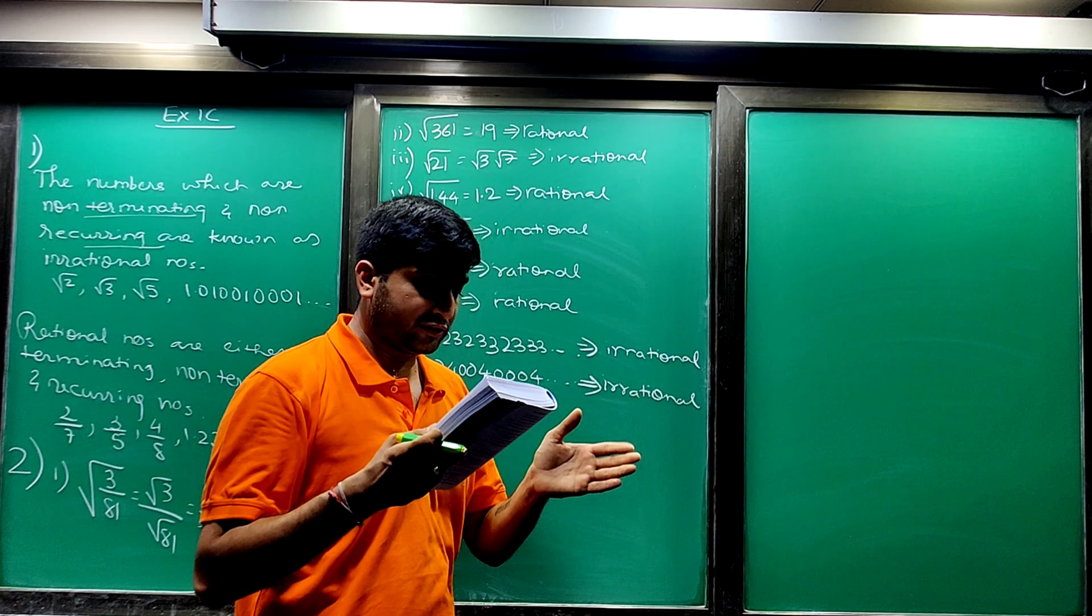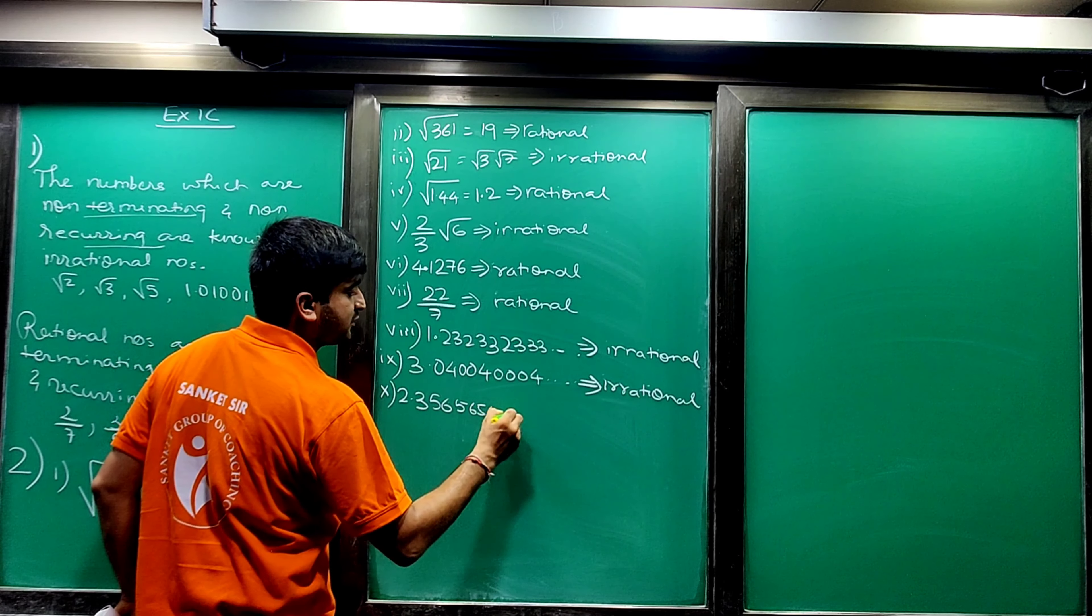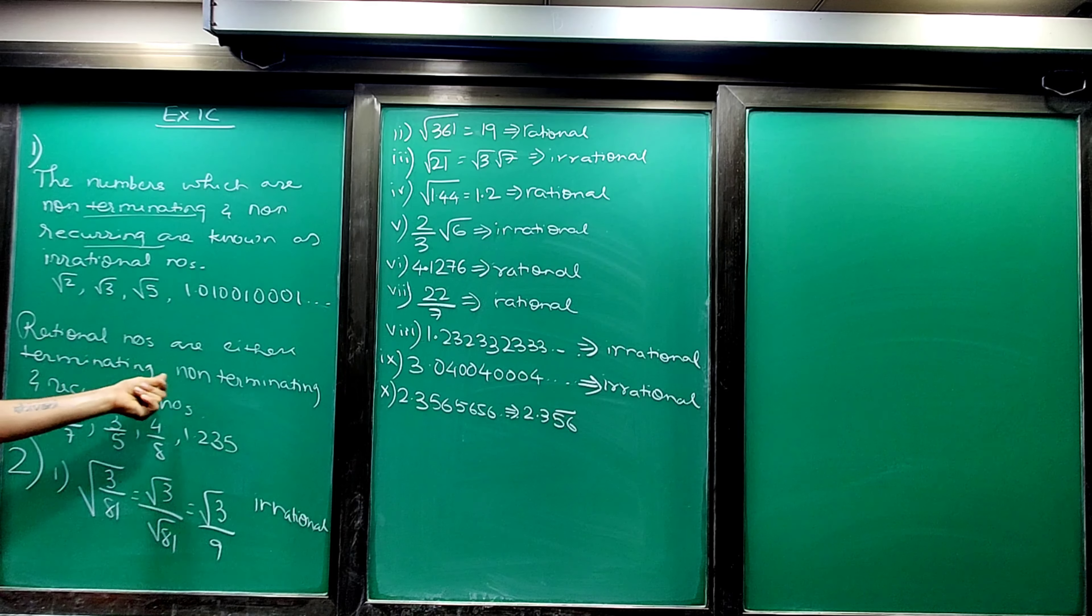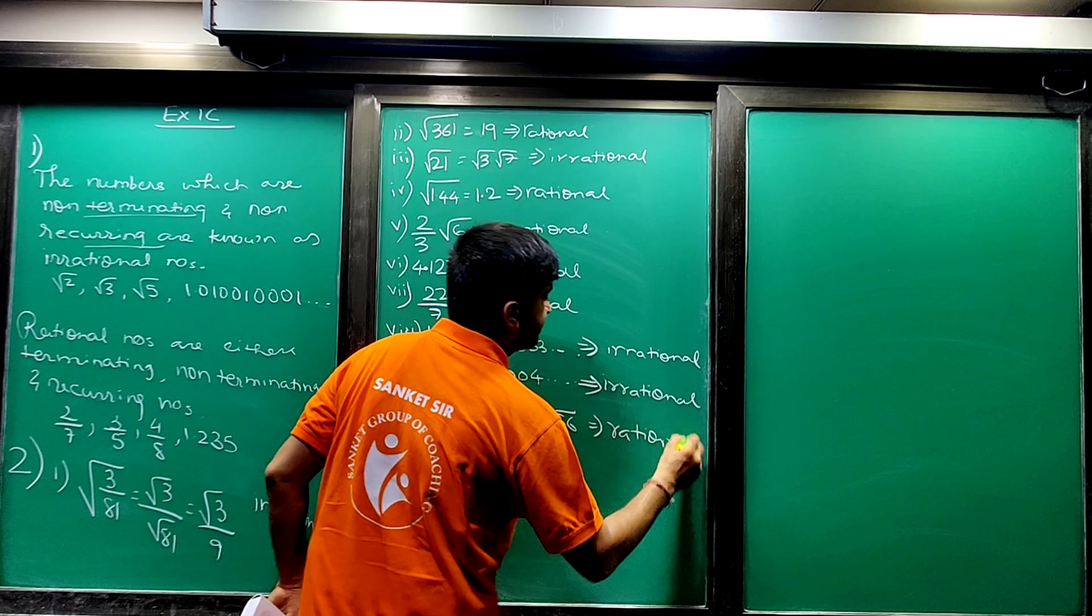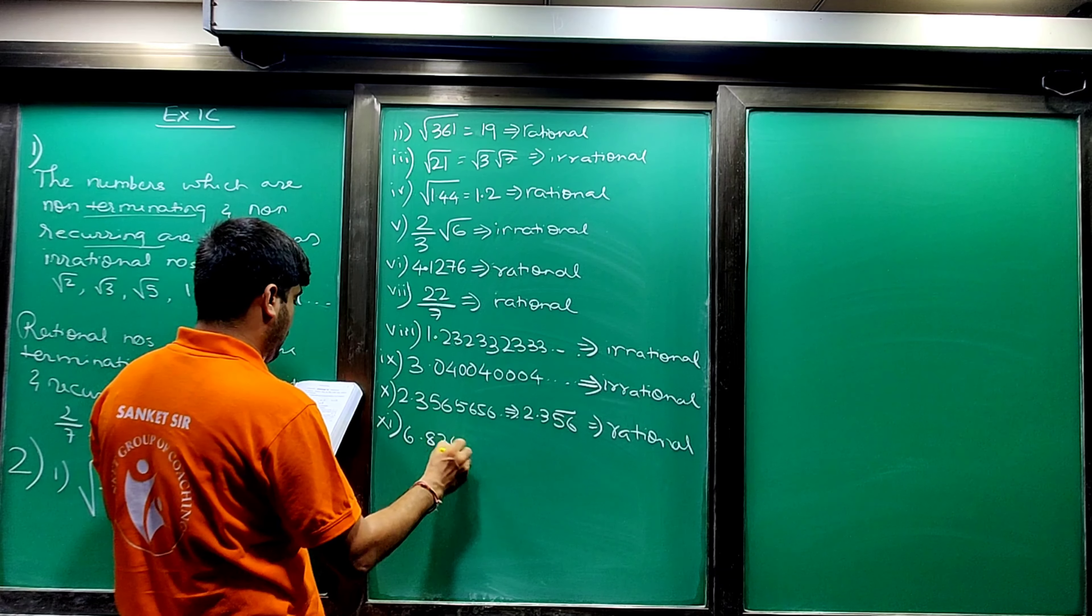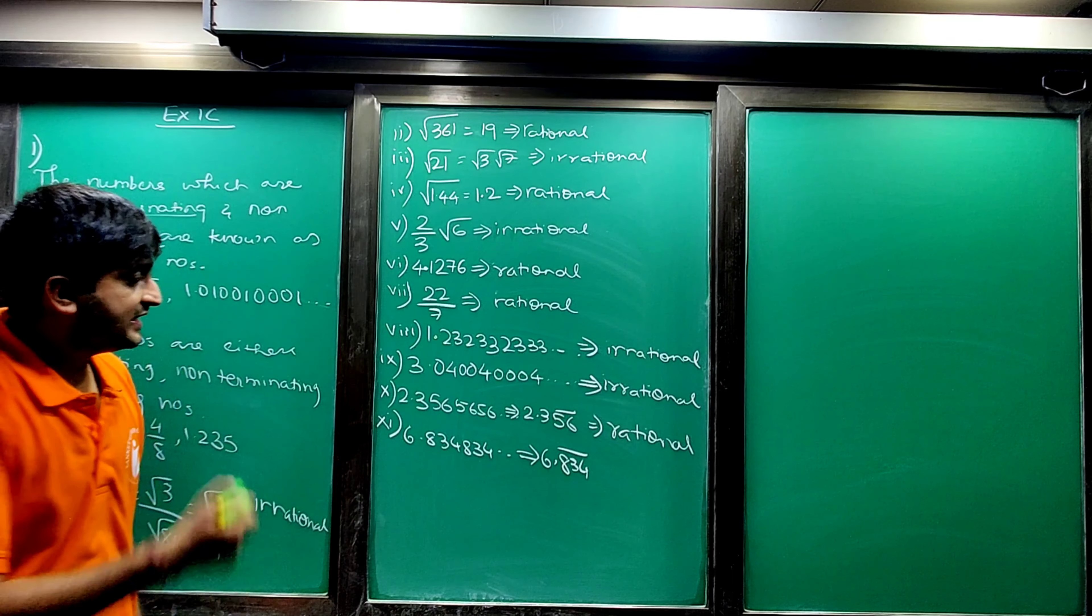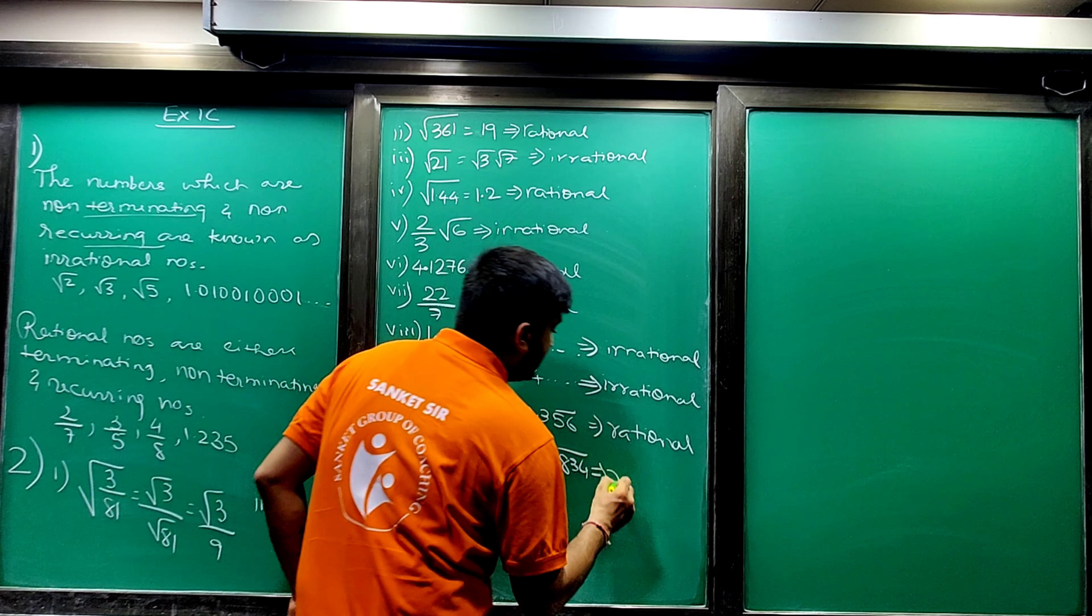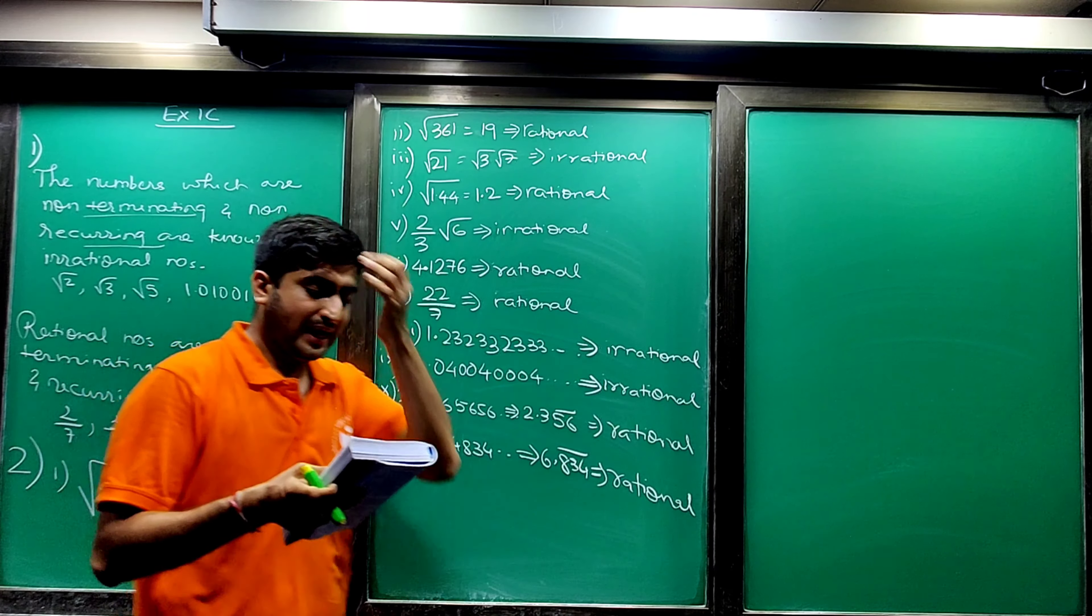Then tenth: 2.356, 5656, 5656, 5656 and so on. This can be written as 2.35 bar 6 bar. Sum number 11: 6.834, 834, 834 and so on. This can be written as 6.834 whole bar. As it is whole bar, again it is your non-terminating recurring number, and hence it is a rational number.